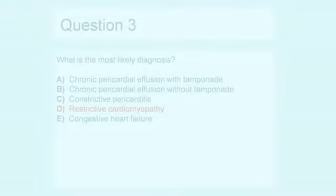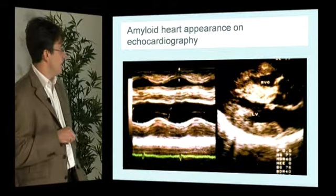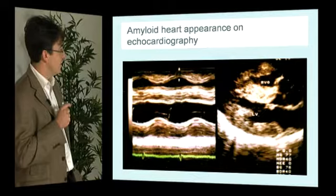Almost certainly the description in this question is of an infiltrative process such as amyloid. Here on this echocardiogram image — both in M-mode on the left and in conventional 2D — you can see a very bright, speckly appearance which is classic and pathognomonic of amyloid infiltration.